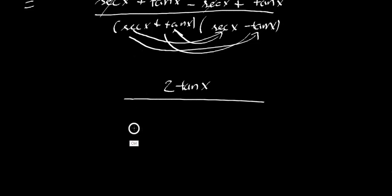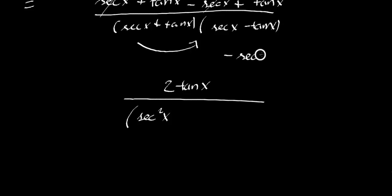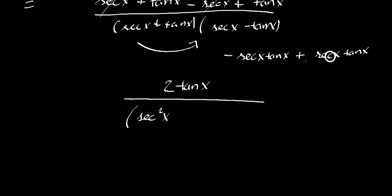Secant times secant is secant²x. Continuing: secant times negative tan is negative secant x·tan x. Then tan times secant is positive secant x·tan x — and these cancel, because negative plus that same thing cancels each other. And you're left with tan times negative tan x, which is just negative tan²x.